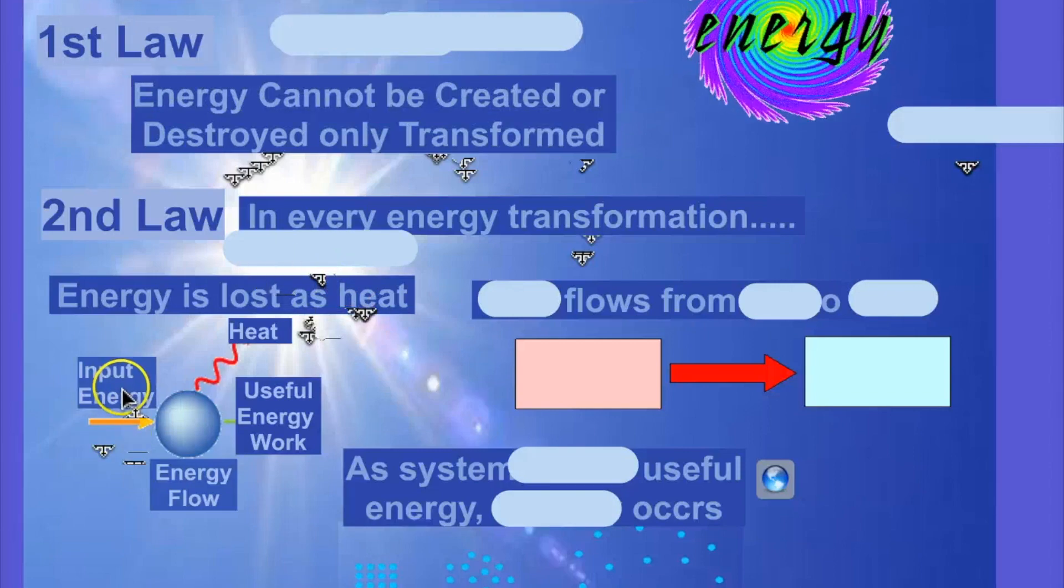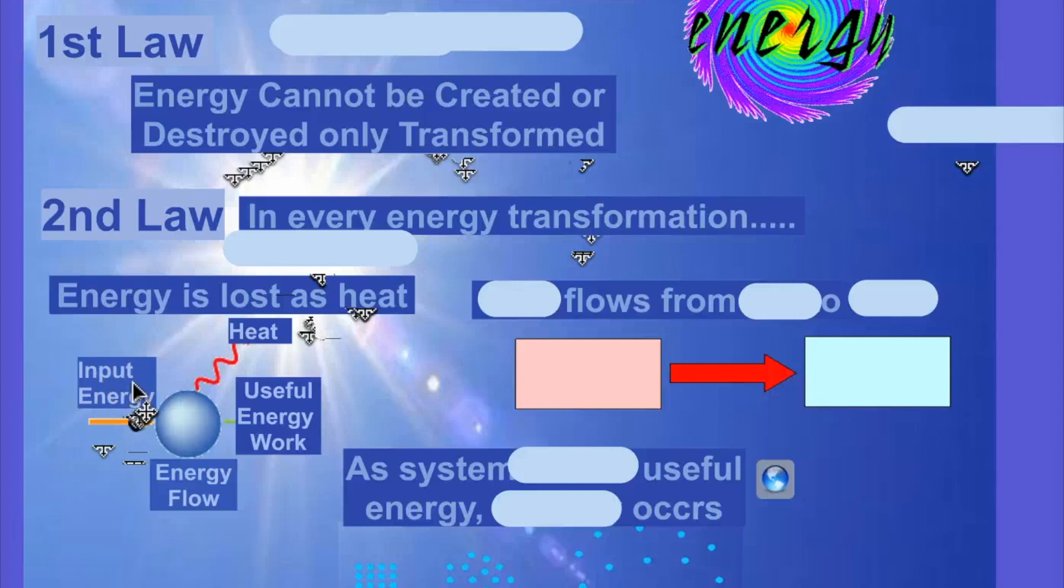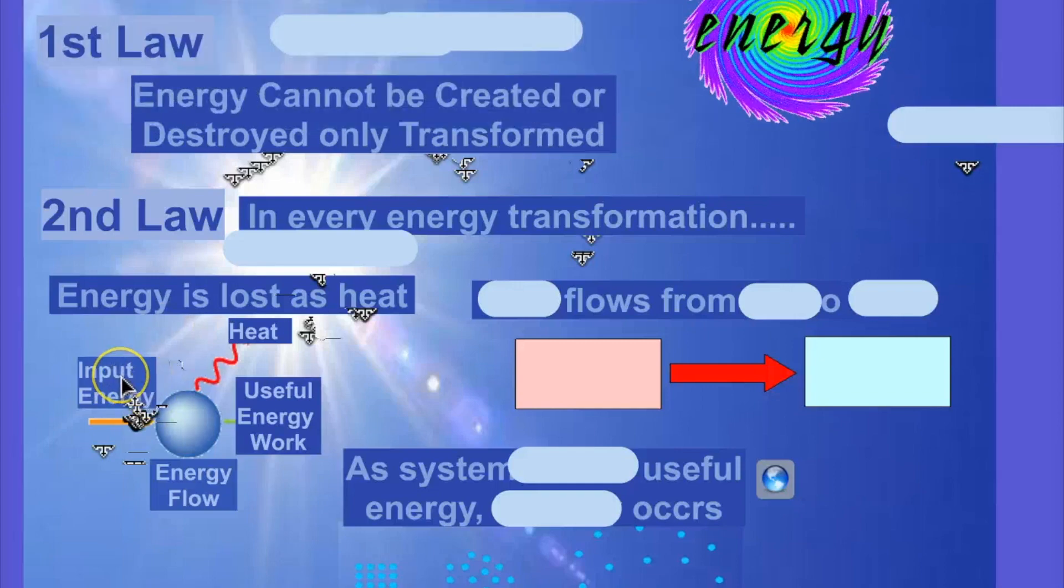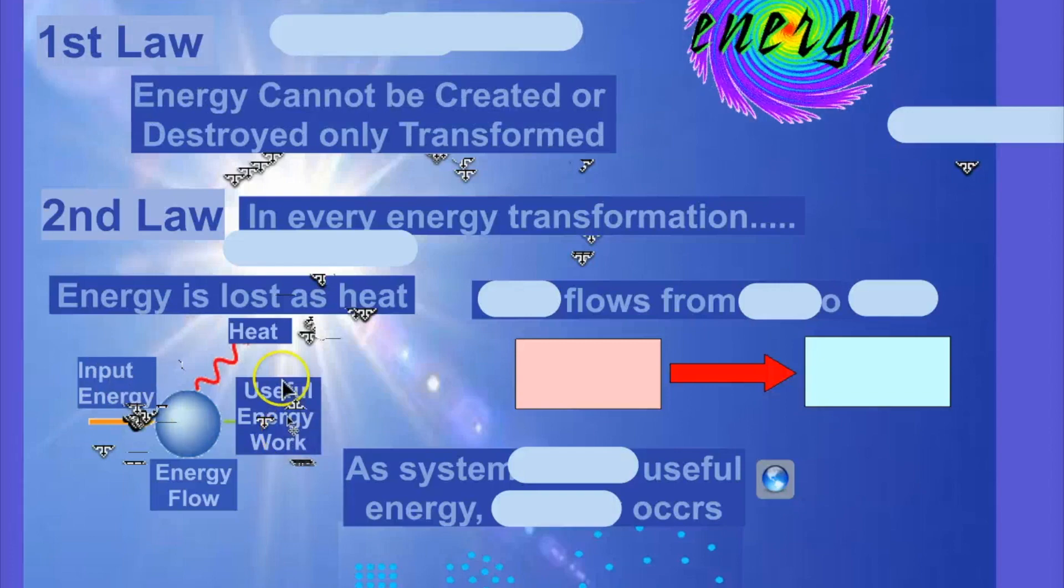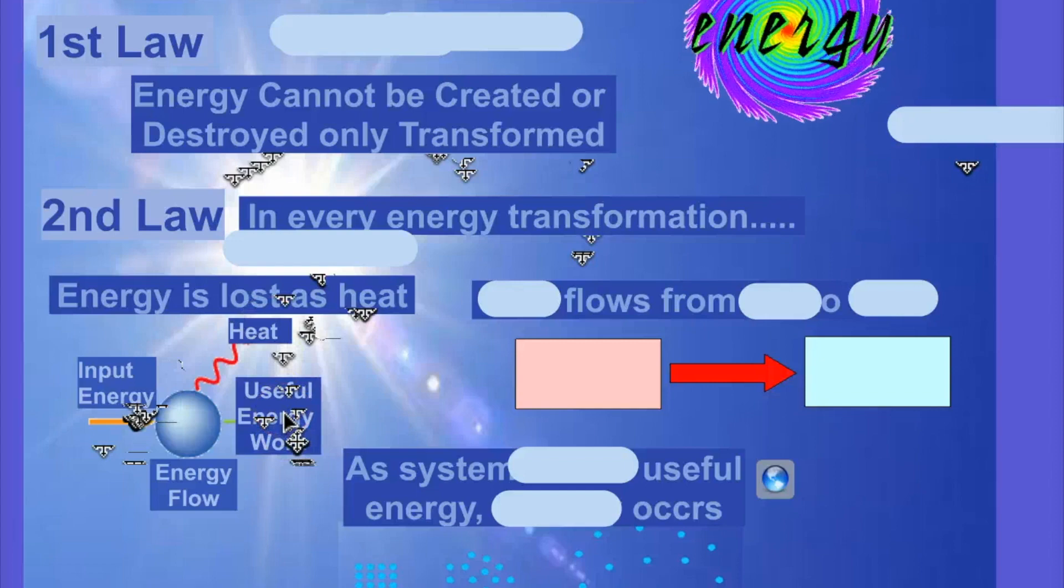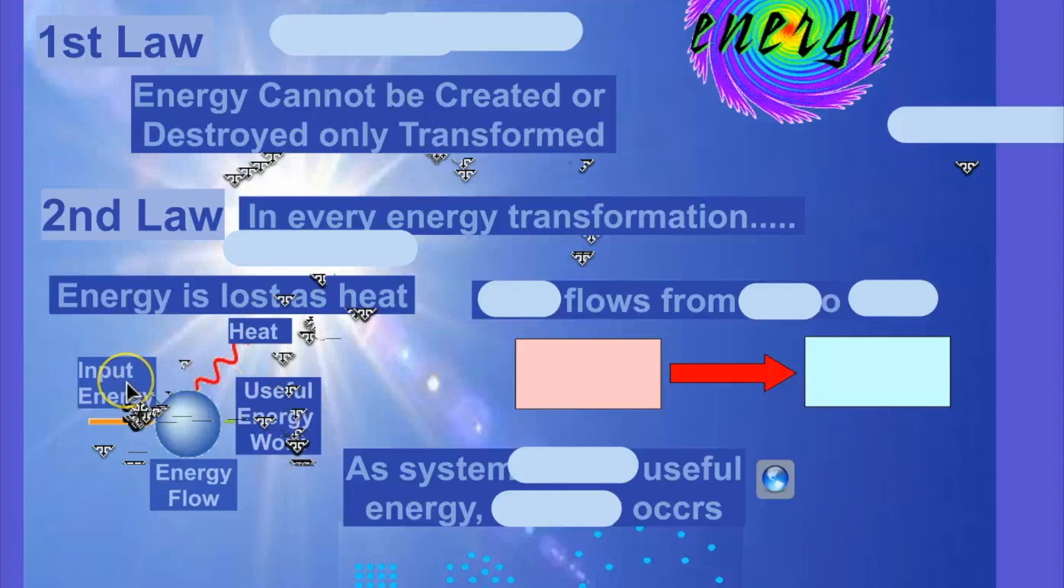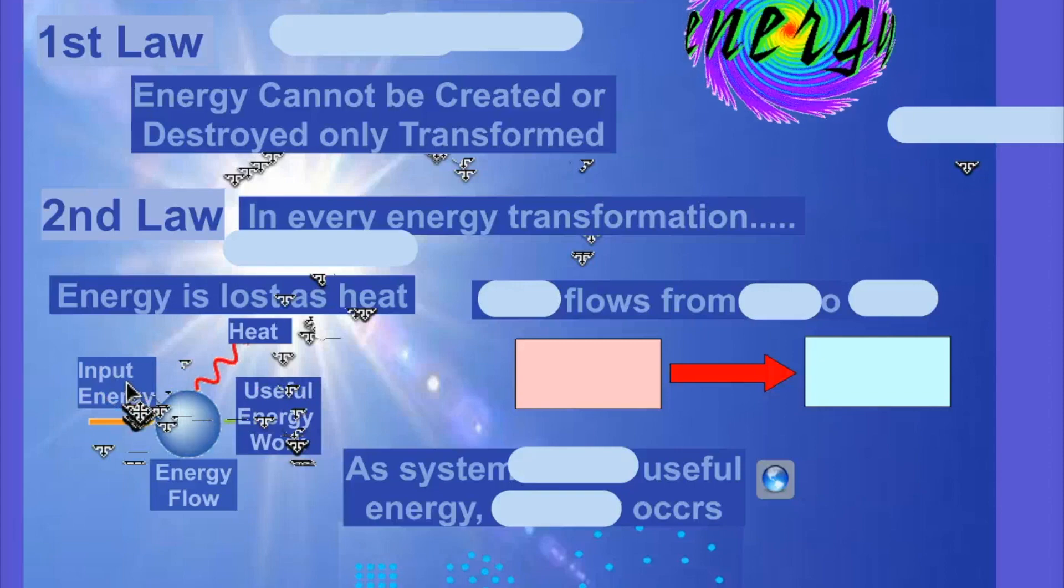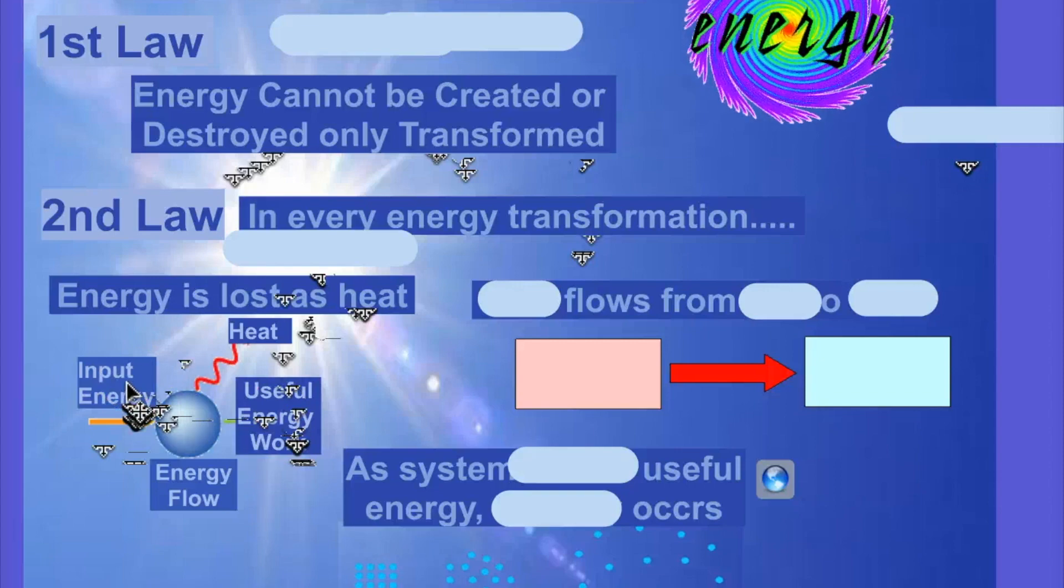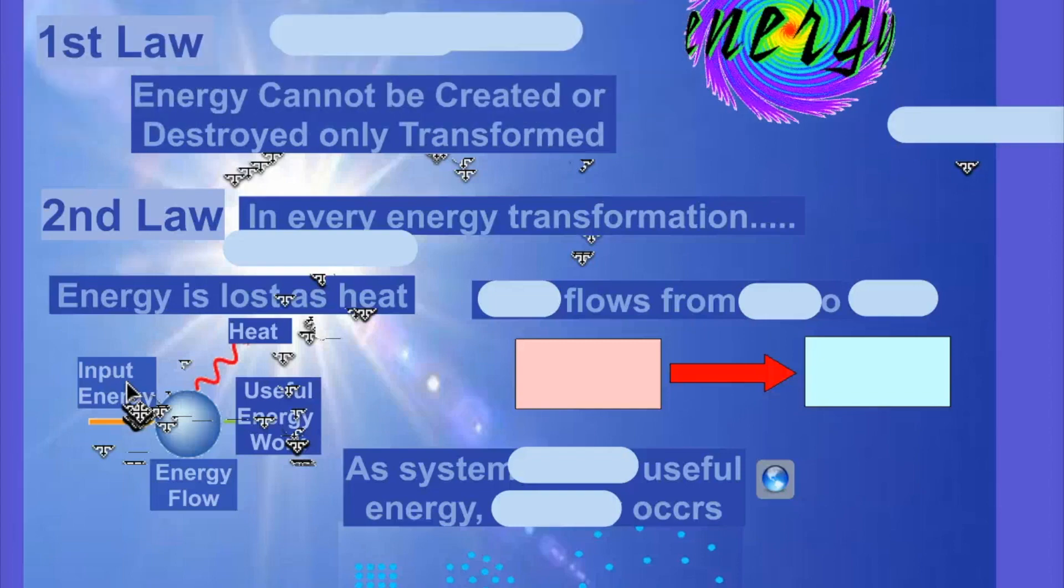So you see this picture right here, where it says energy input? I can't stress this enough. Energy input always equals energy output. The difference is, the available energy to perform a task gets lost. So this energy input equals the heat plus the useful energy. It equals the initial system because energy can't be destroyed. It's just not going to be usable energy.